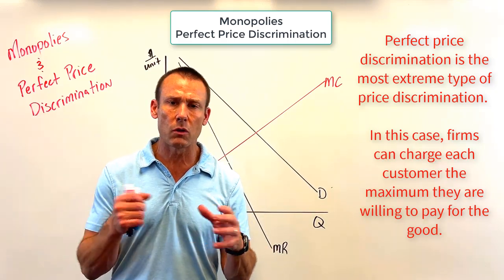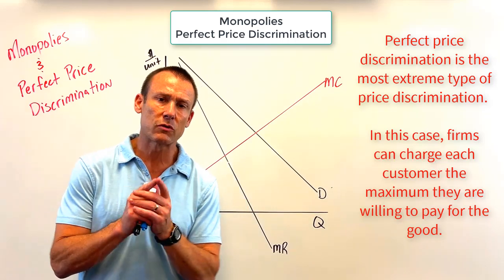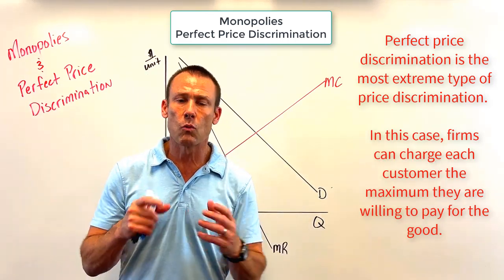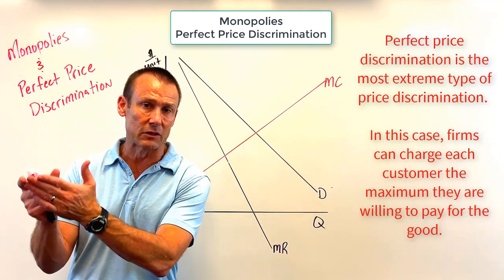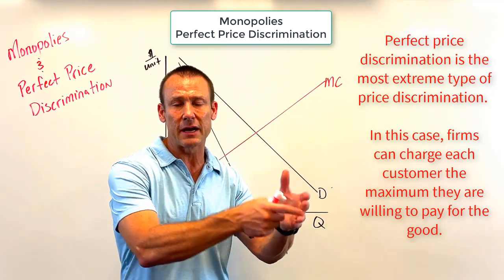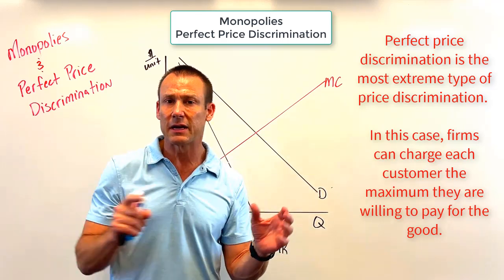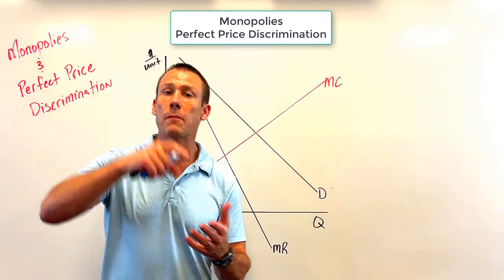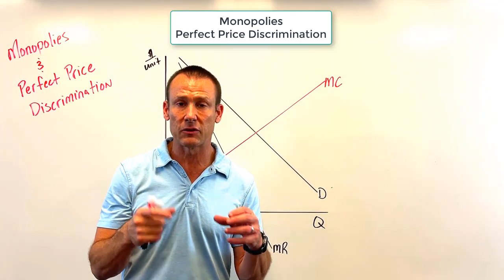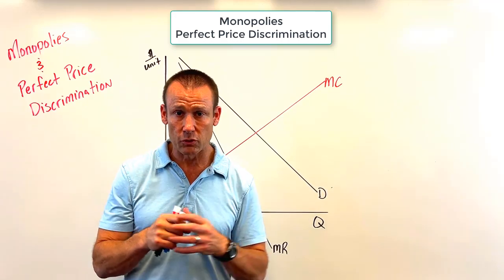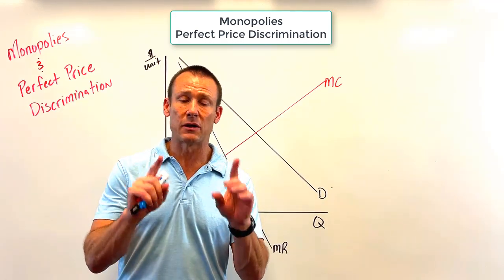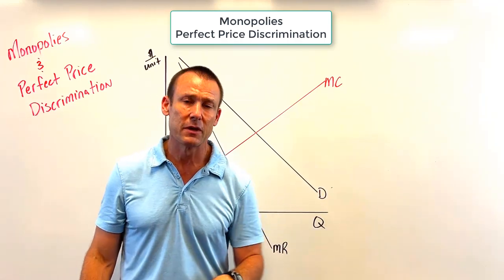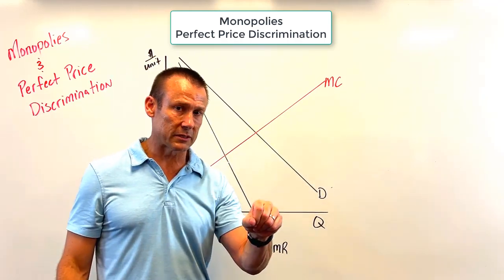You don't see perfect price discrimination a lot in the real world. In 101 or AP classes, we teach two ends of the spectrum when it comes to pricing: one end is zero price discrimination, and the other side is perfect price discrimination. Upper division micro classes get into things in between those two extremes.